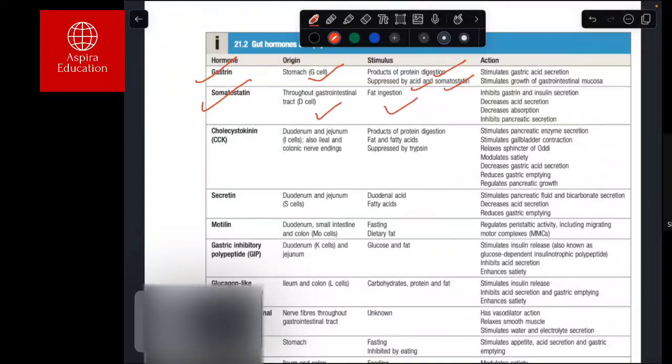Cholecystokinin, as the name suggests, stimulates gallbladder contraction. It's produced by the duodenum and jejunum I cells. Secretin, as I mentioned, is primarily produced by the duodenum and jejunum S cells and stimulates pancreatic fluid and bicarbonate secretion.